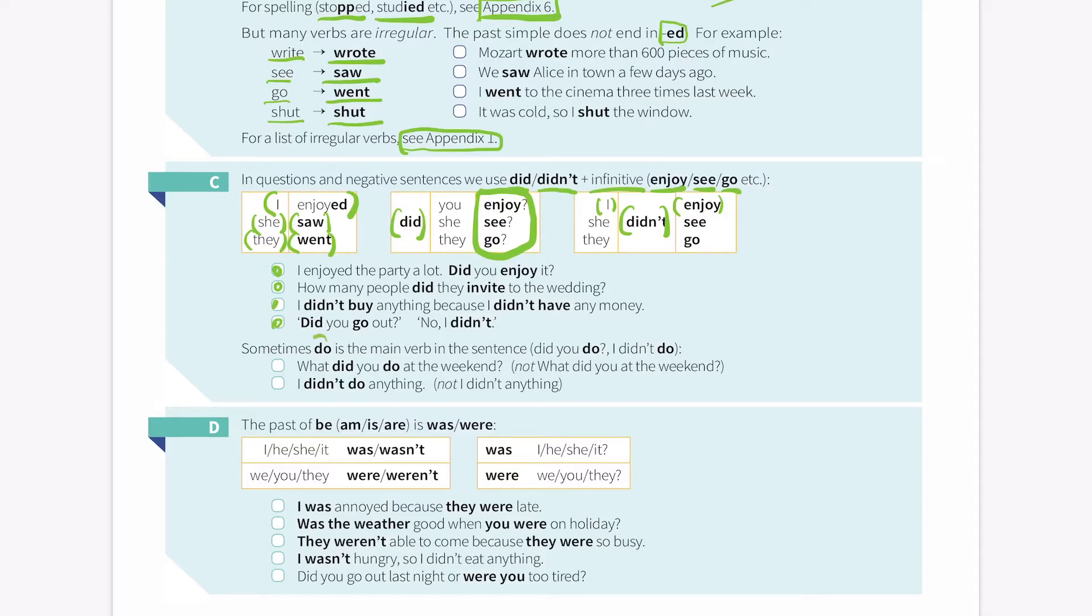Sometimes do is the main verb in the sentence. Did you do? I didn't do. What did you do at the weekend? You wouldn't say, what did you at the weekend? I didn't do anything. Not, I didn't anything. Good. So let's move on to D next.